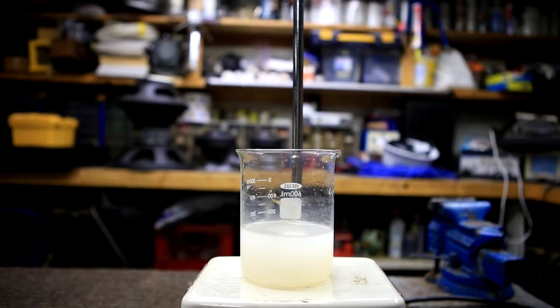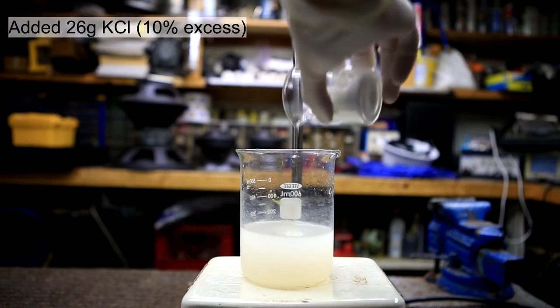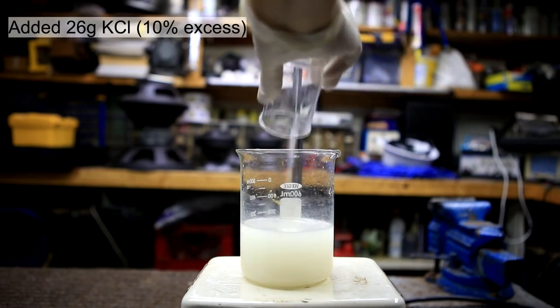After the solution is filtered heat it up to about 80 to 90 degrees Celsius. To the hot solution 26 grams of potassium chloride was added.